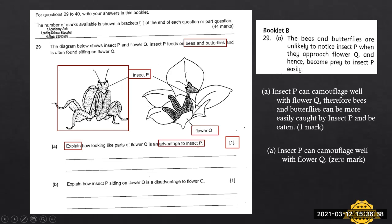If the student gives this answer, insect P can camouflage well with flower Q, no marks will be awarded because the student failed to explain. So explanation is very important, as I mentioned here. Because nowadays, the student needs to explain. Explain means give valid reason. So in this question, the student must say that insect P can camouflage well or blend well with flower Q. Therefore, bees and butterflies can be more easily caught by insect P and be eaten.